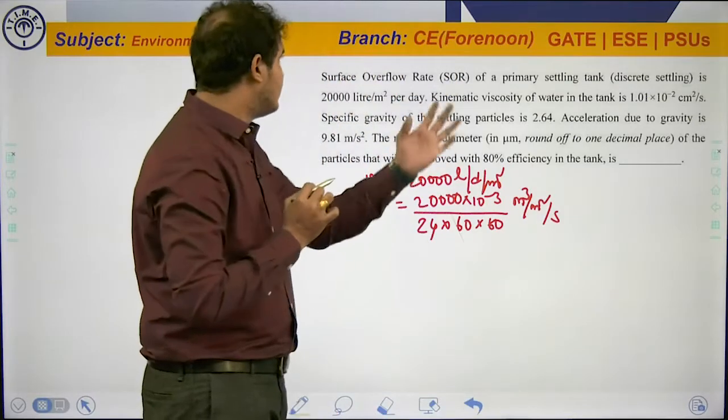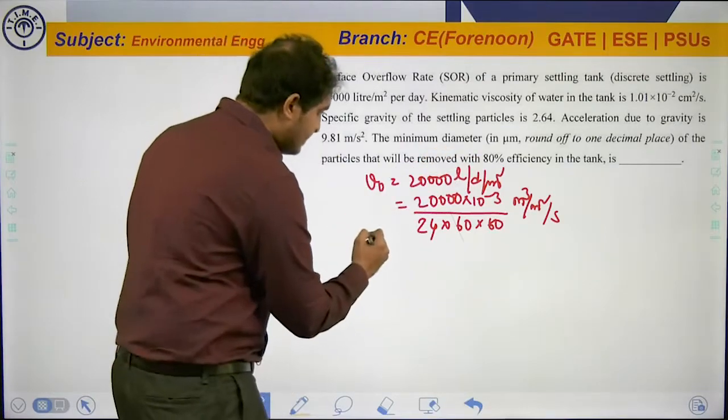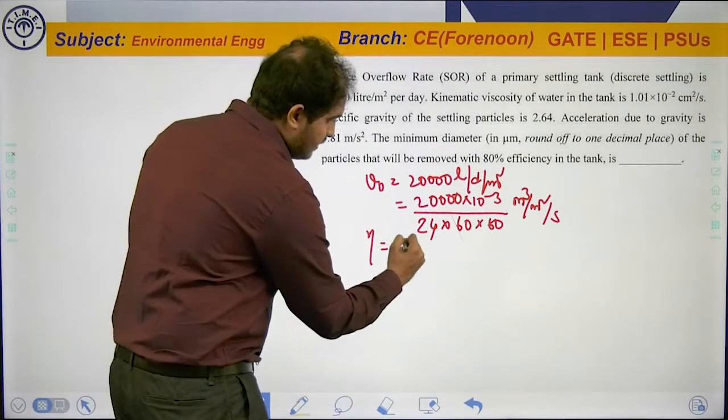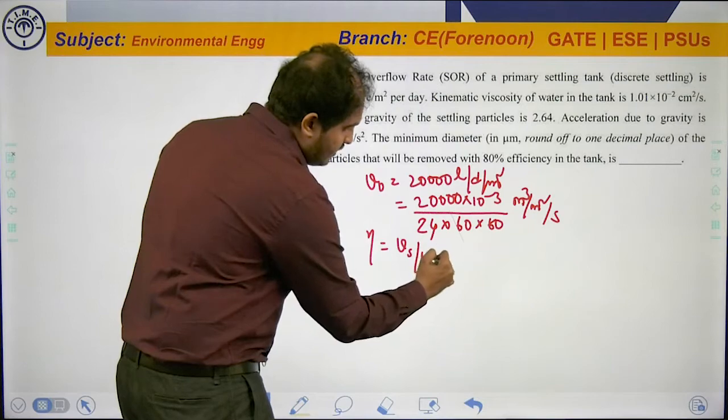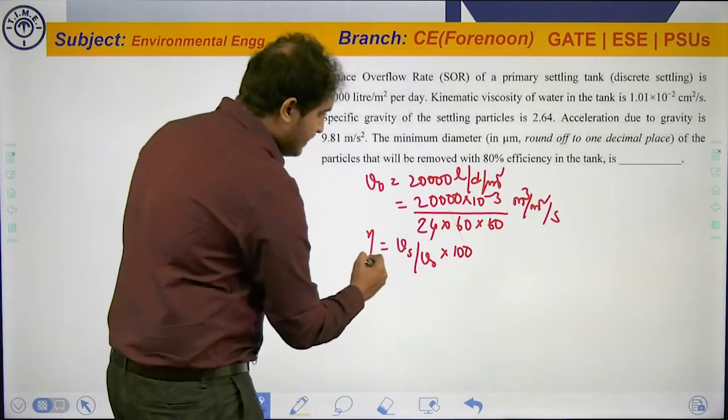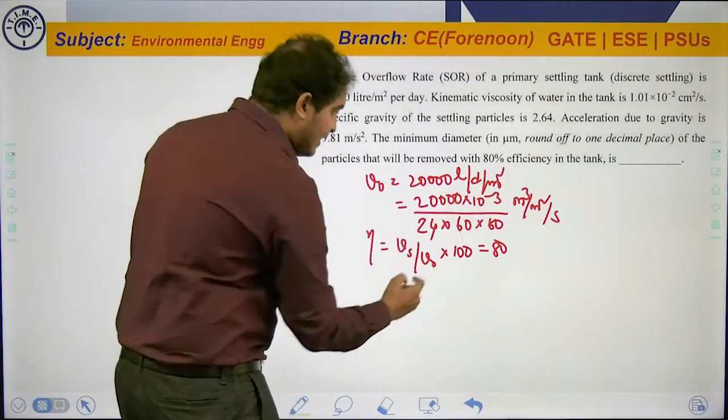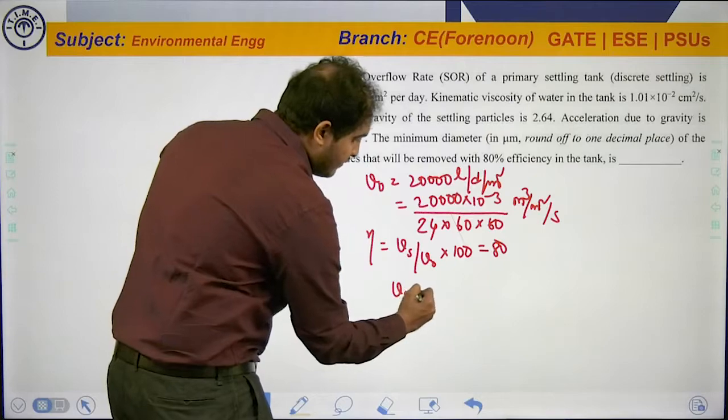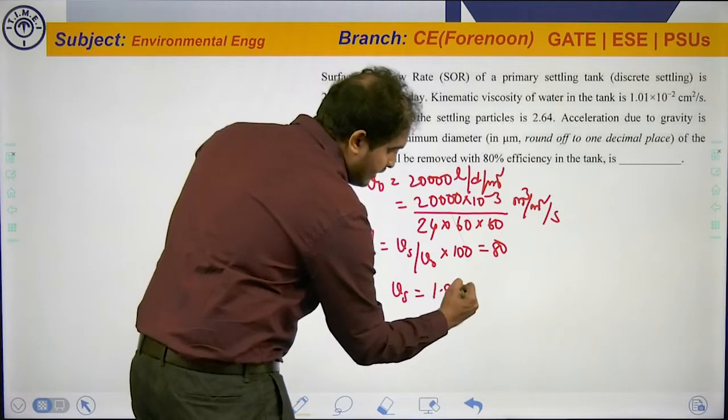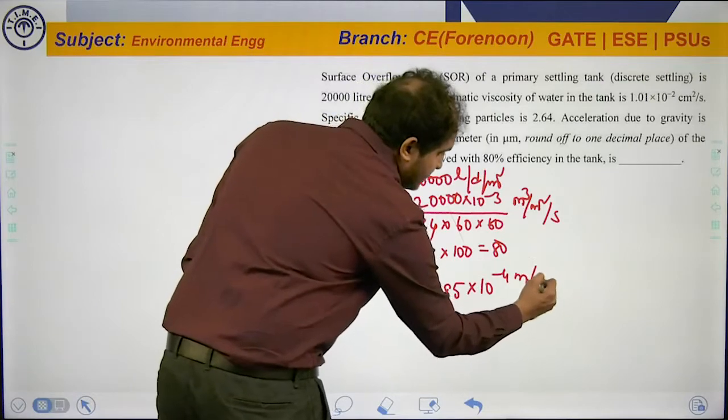Now, we are given the efficiency of particle removal is 80%. Therefore, we know η = Vs/V0 × 100. On substituting, η equals 80, and we know V0 equals this value. On substitution, we will be getting Vs = 1.85 × 10⁻⁴ meters per second.